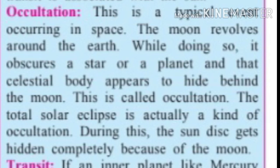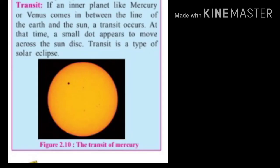The total solar eclipse is actually a kind of occultation — during this, the sun's disc gets hidden completely because of the moon. Transit: if an inner planet like Mercury or Venus comes between the line of the earth and the sun, a transit occurs. At that time, a small dot appears to move across the sun's disc. Transit is a type of solar eclipse.